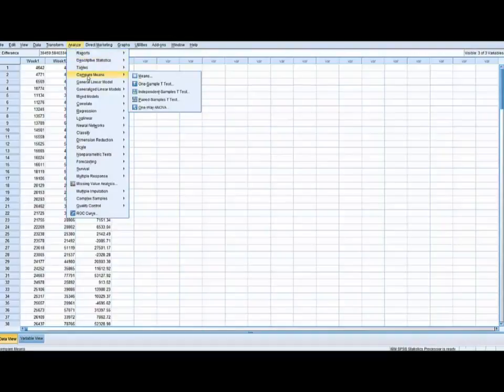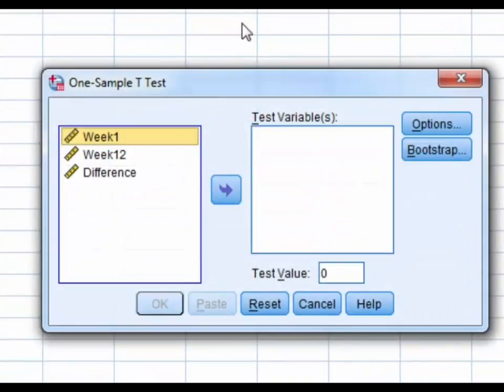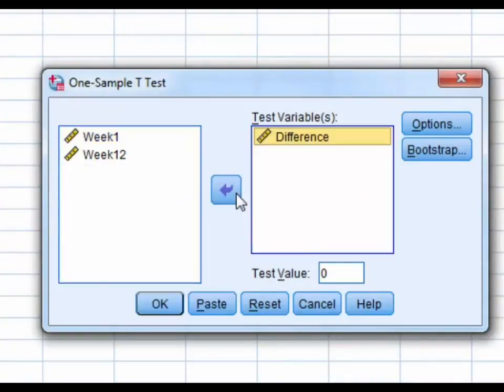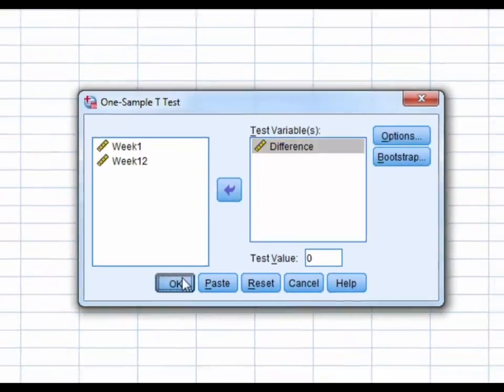Analyze, compare means. Remember now we're going to use a one-sample t-test. So, we're going to analyze the difference as the test variable. And we want to test whether the average value for difference is different than our test value. Our test value would be zero. Is the difference that we've obtained significantly different than zero? Click okay, and here are our results.